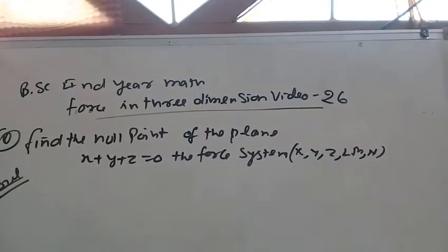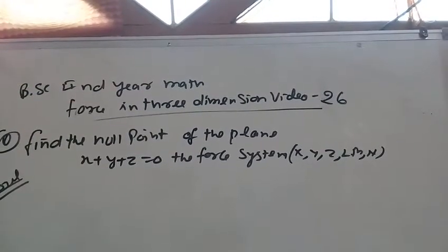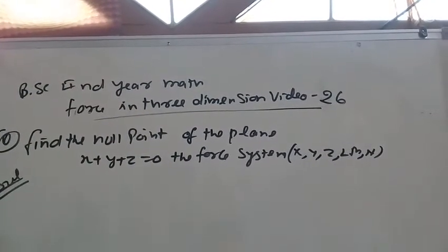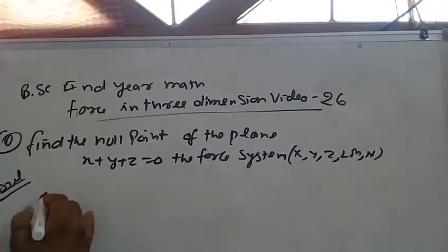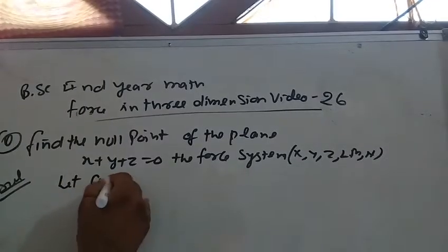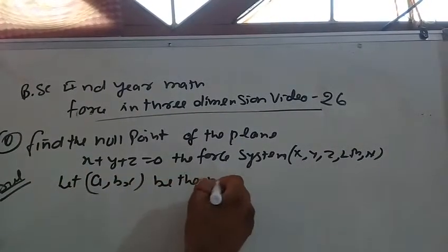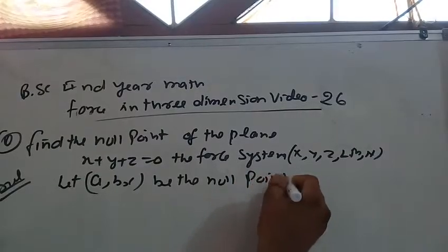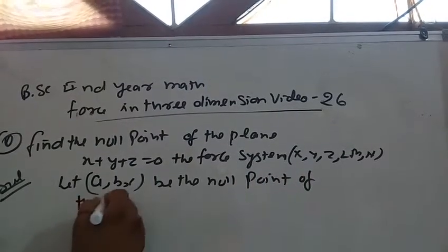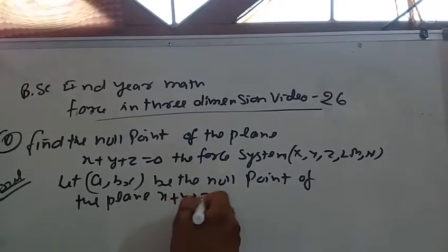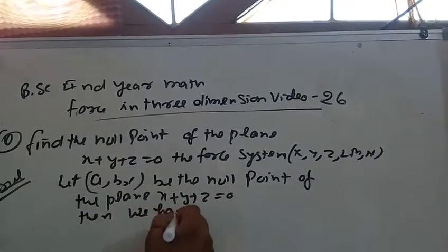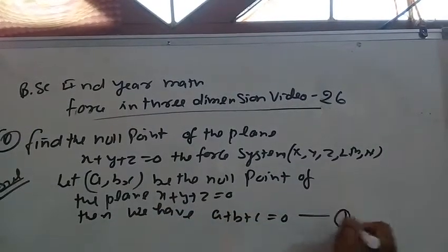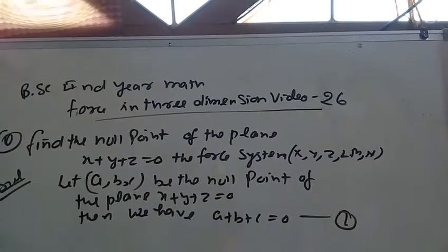This is video number 26 on basic India mathematics in the fourth dimension. Find the null points of the plane x plus y plus z equal to 0, with coordinate system x, y, z and l, m, n. Let (a, b, c) be the null point of the plane x plus y plus z equal to 0. Then we have a plus b plus c equal to 0 — this is equation number one.